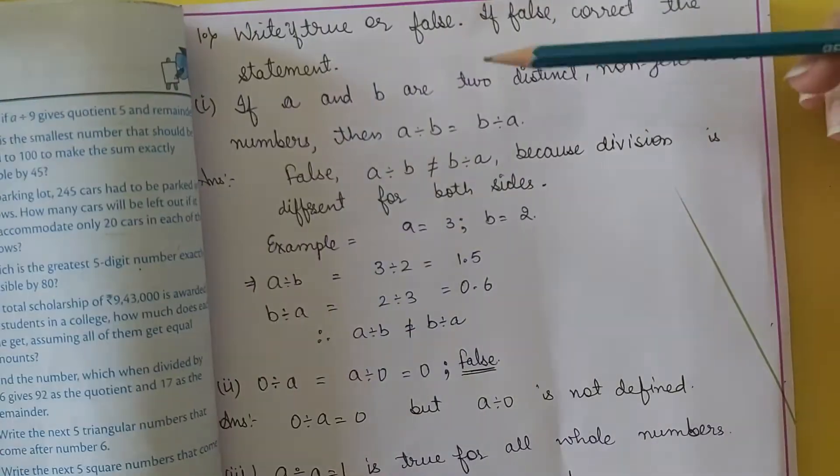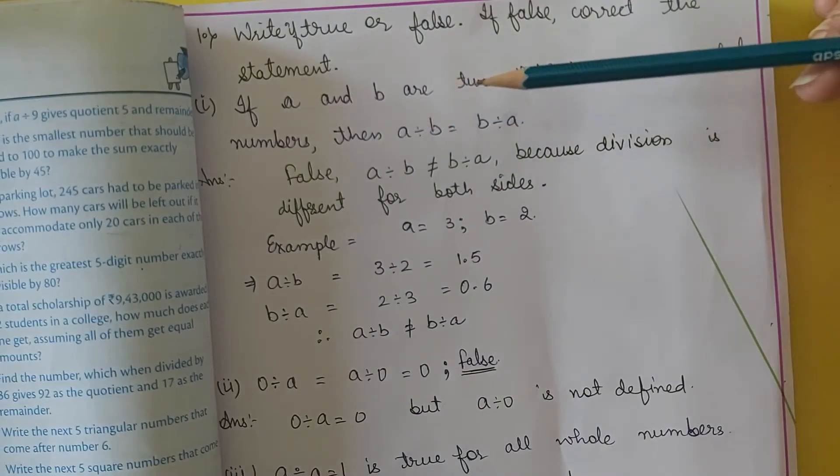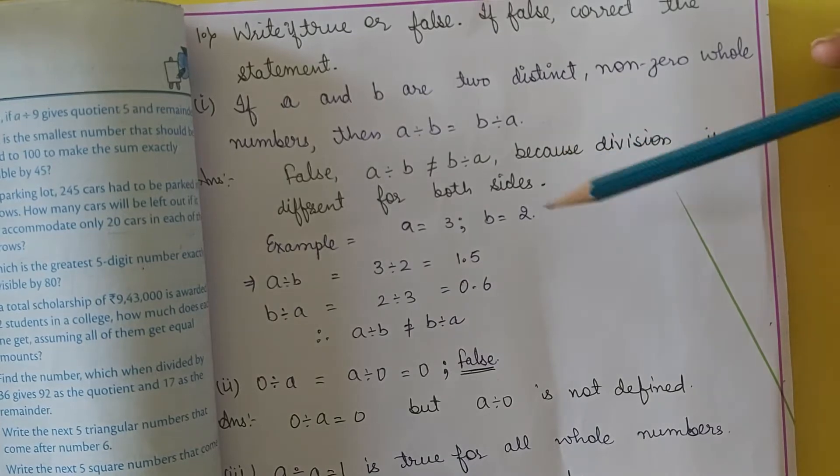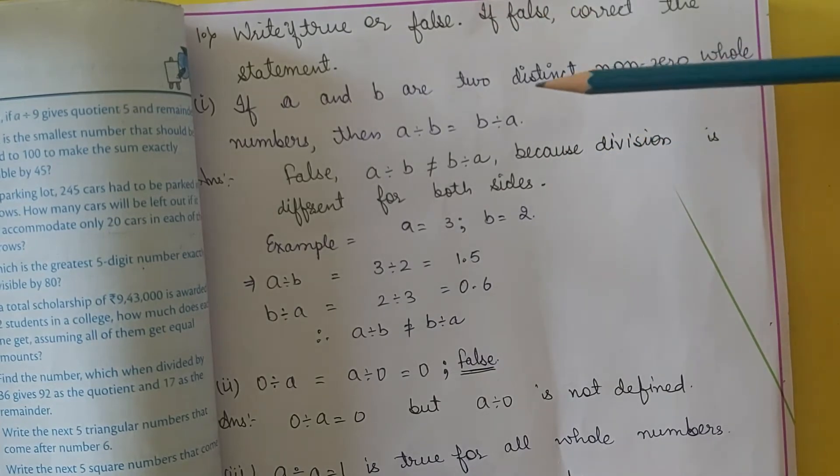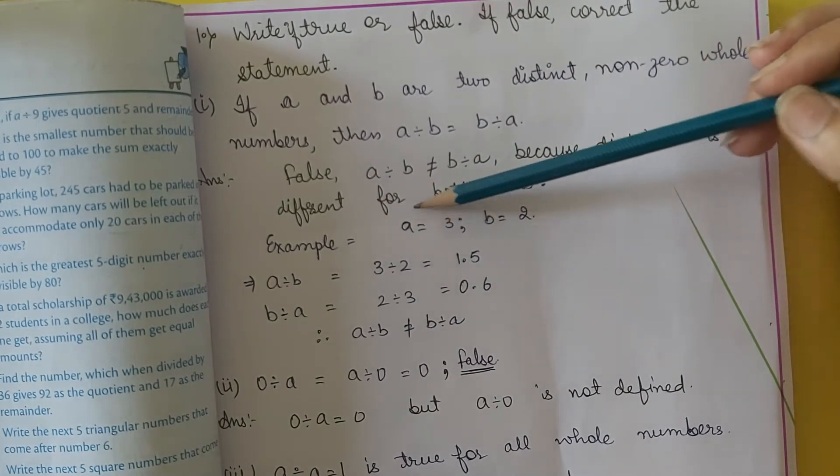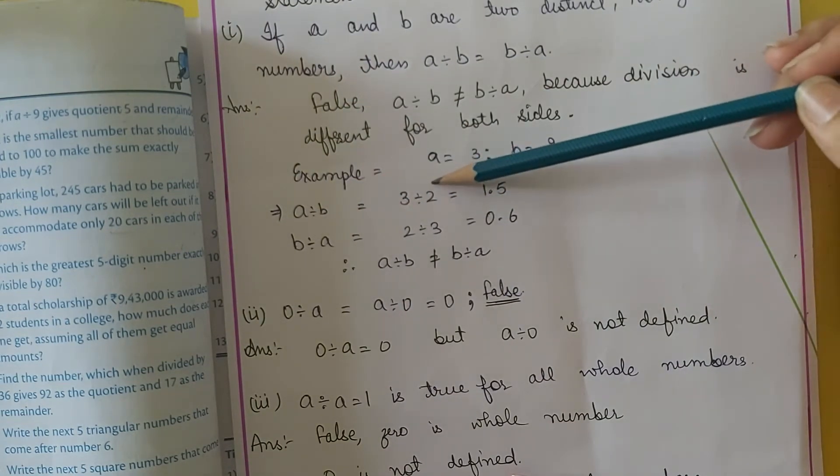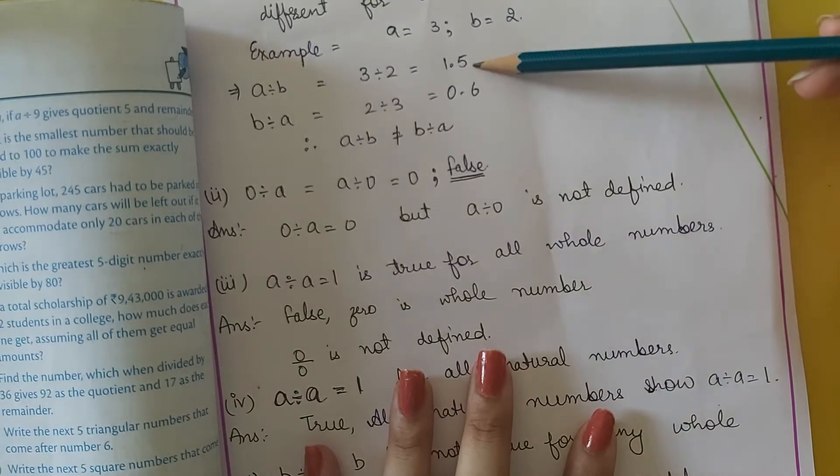Look, if A and B are any two distinct whole numbers, this statement is not true. Let us prove this with an example, taking A equals 3 and B equals 2. A divided by B, that is 3 divided by 2, which equals 1.5.